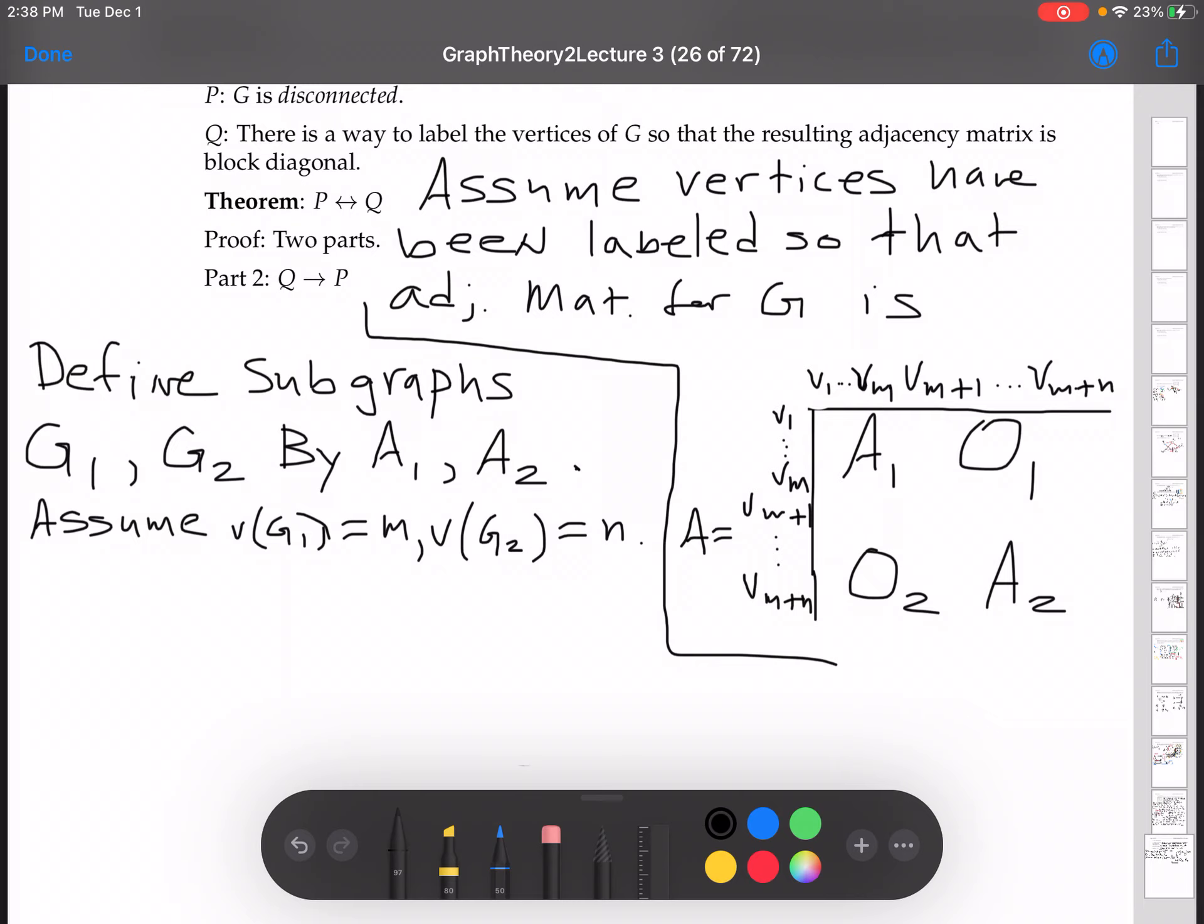Now I claim that G1 and G2 are disconnected. I will prove this claim using contradiction. So let's suppose that G1 and G2 are not disconnected.